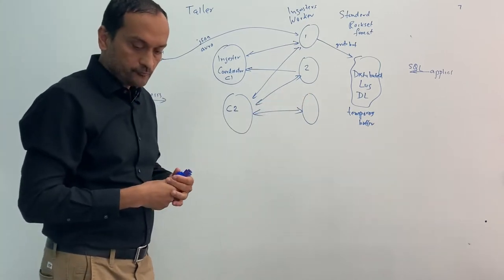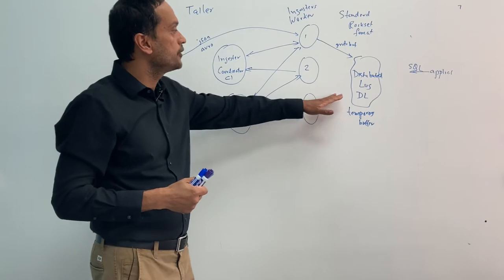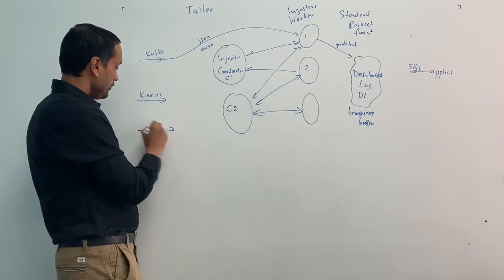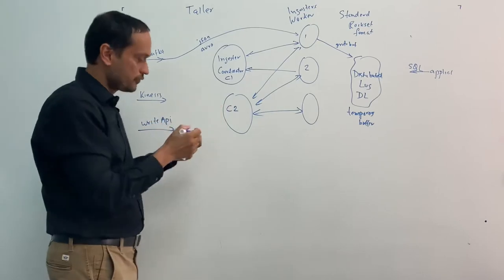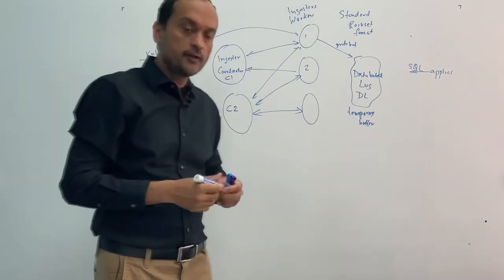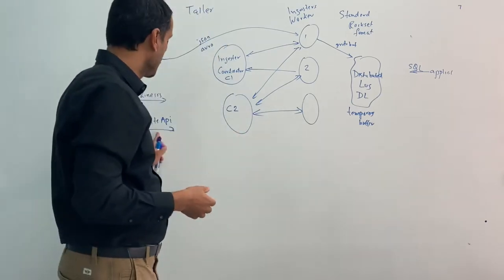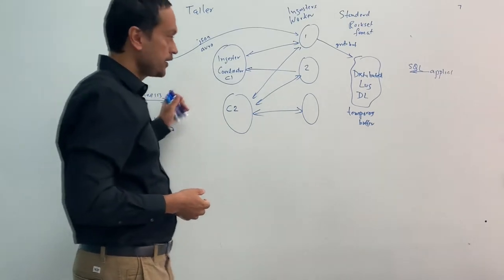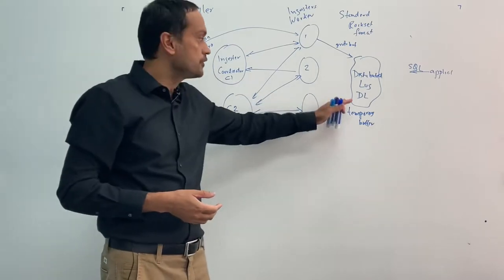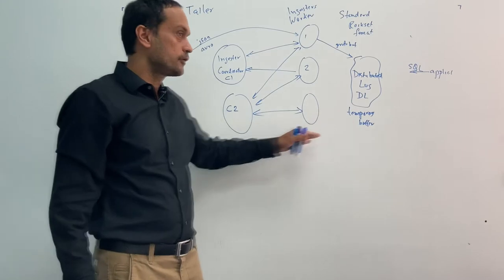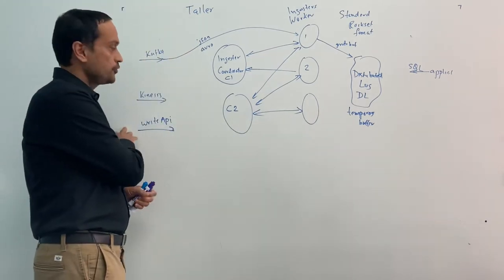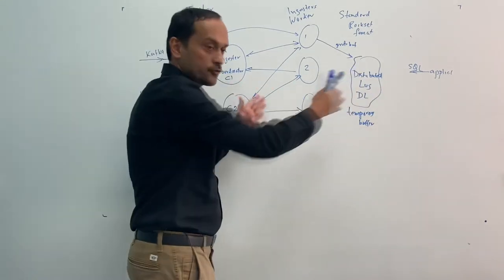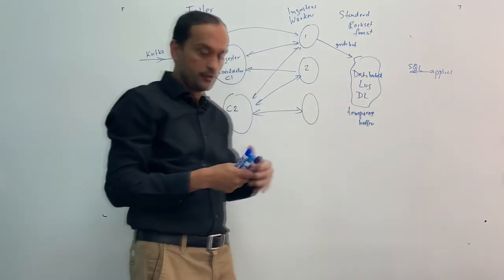The distributed log is there because all this data is coming in, and there's also the Write API, which means you can actually deposit data into Rockset directly from your application. The focus is on not losing data and making it durable as soon as it comes in — that's the reason for the distributed log. Once the data hits the distributed log, the Write API returns success and you can be sure your data will be processed by Rockset. The data latency is one to two seconds from when data appears in the log to when it is queryable in the engine.